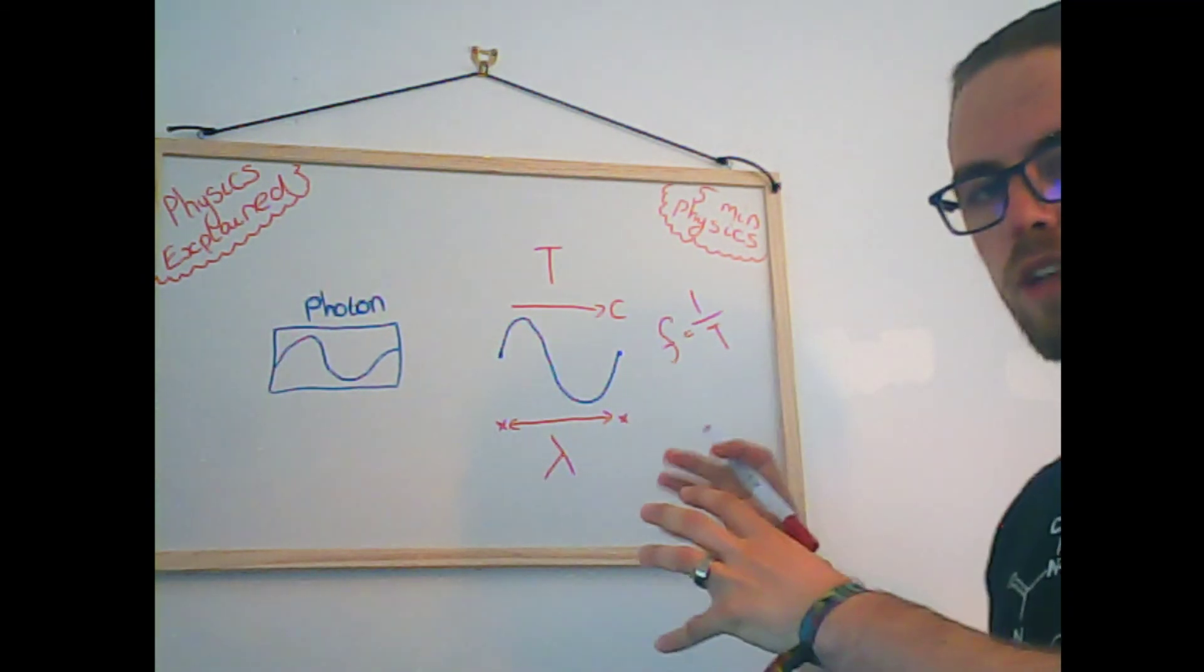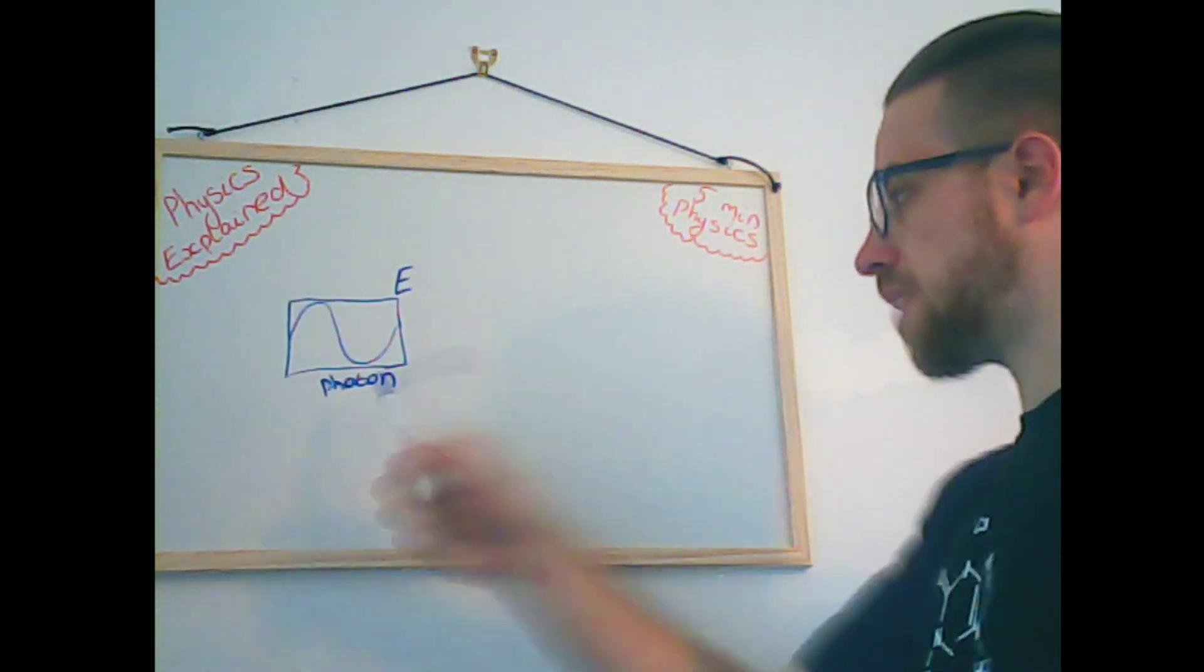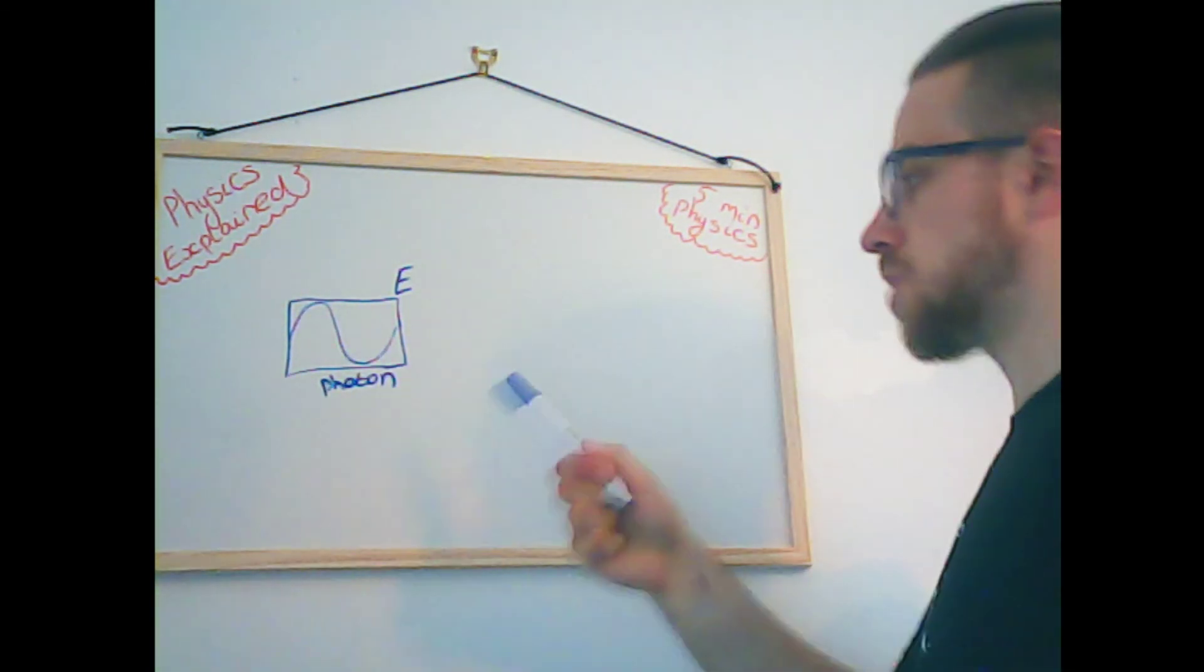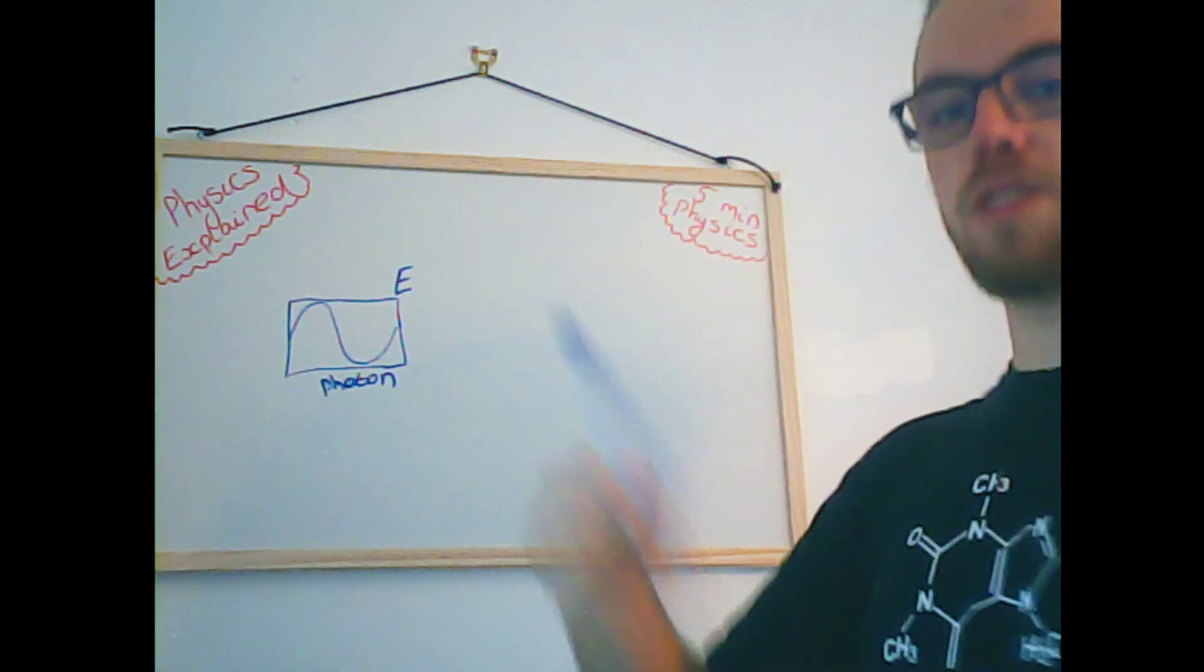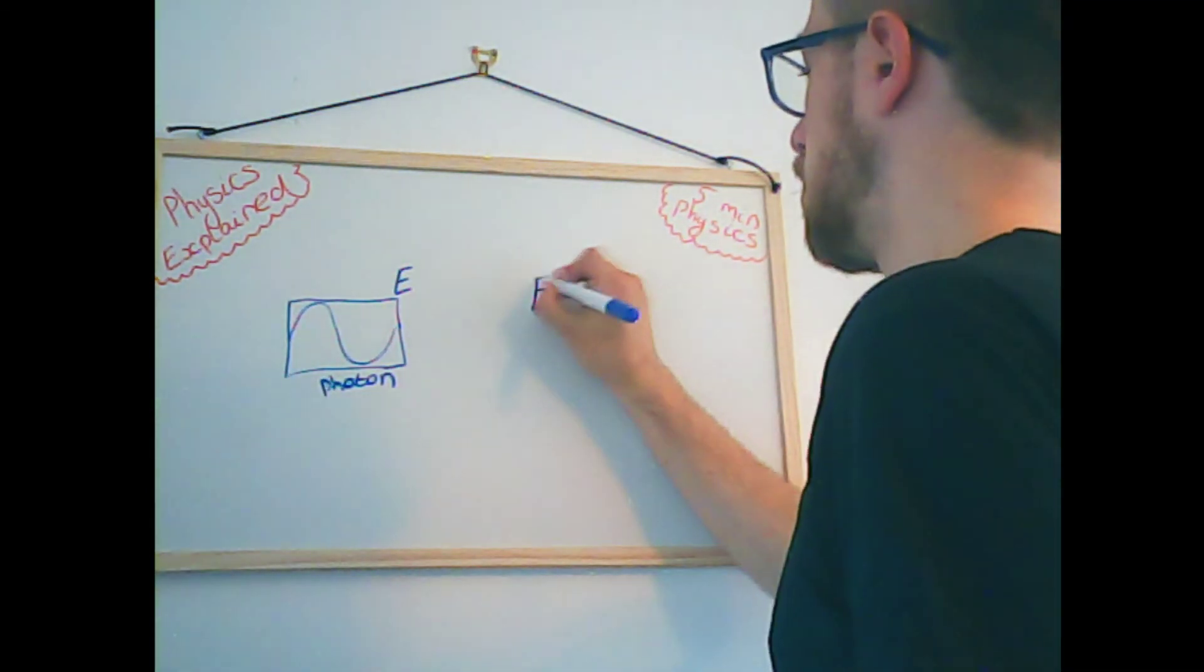The frequency and the wavelength is what governs the energy that this photon has. So we have our photon and we know it has some associated energy, e, with it. We also know that it has a frequency and a wavelength associated with it as well. And these are related with some constants.